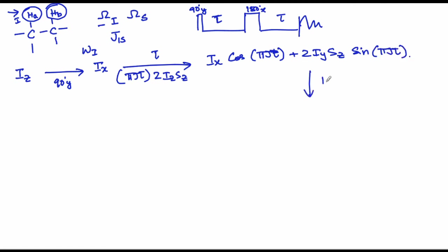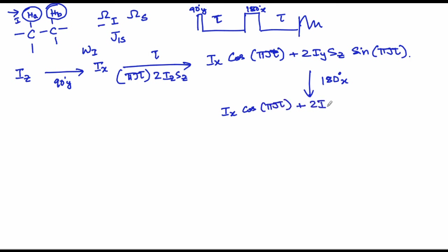You are applying a 180 degree pulse along the x axis. Remember, this pulse is experienced by both protons i and s. Therefore, Iy goes to −Iy and Sz goes to −Sz, so minus of minus will remain plus. You get no change: you get Ix cos(πJτ) + 2Iy Sz sin(πJτ).